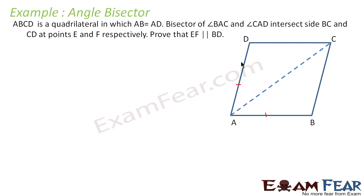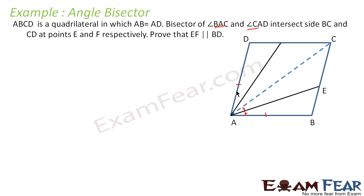We have got angle BAC and angle CAD. The question says the bisectors of angle BAC and angle CAD intersect BC and CD at points E and F. Let's draw the bisector of angle CAB — here this angle is equal to this angle. We label these as angle 1, angle 1 dash, angle 2, and angle 2 dash.